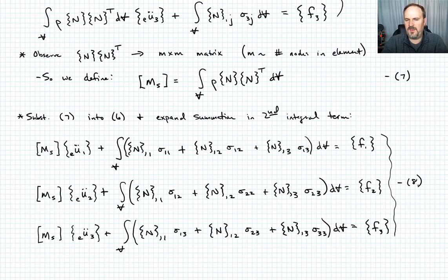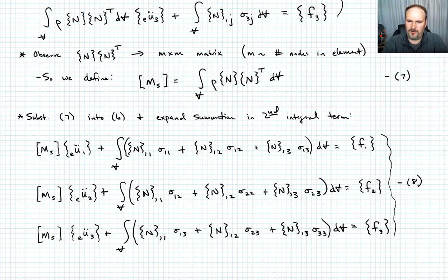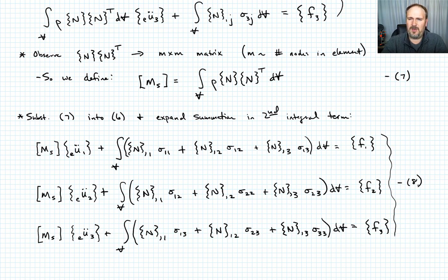We're getting pretty close. The terms that look like M_s times the acceleration vectors show how the matrix equations are going to emerge. We'll also need to evaluate integrals and explain how to map interpolation functions from natural coordinates xi, eta, zeta to physical coordinates x, y, z — we'll talk about that in future lectures. In part two of what follows this lecture, we'll finish off and finally develop the final form of the matrix equations.